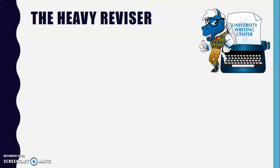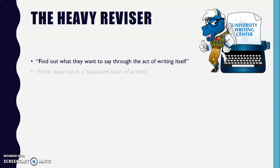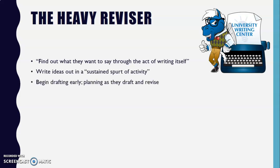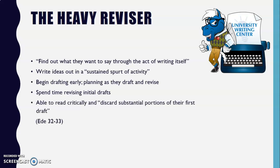The next type of writer is the heavy revisor. These writers need to find out what they want to say through the act of writing itself. Heavy revisors often state that writing their ideas out in a sustained spurt of activity reassures them that they have something to say and helps them avoid feeling frustration. These writers may not seem to plan because they begin drafting so early, but their planning occurs as they draft and especially as they revise. Heavy revisors typically spend a great deal of their writing time revising their initial drafts, and to do so effectively, they must be able to read their work critically and to discard substantial portions of their first draft.